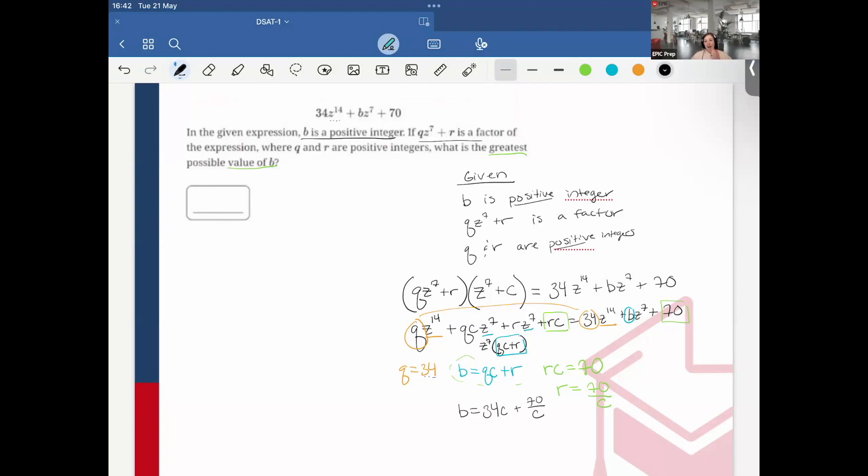Going back to our given facts, remember it says that b is a positive integer. So the only way b is going to result in a positive integer is if c must equal 70. Why? Because it's the only number, the greatest number that could be c. Yes, c could be 1, 2, or any other factor. However, the largest it can be is 70 and still give the largest integer.